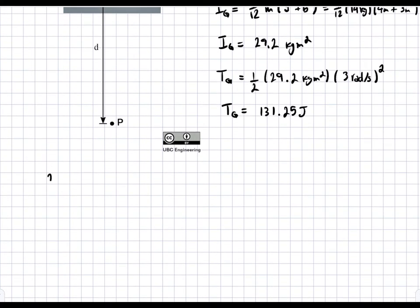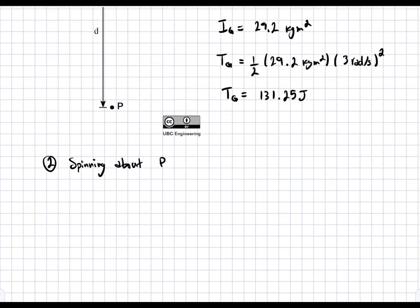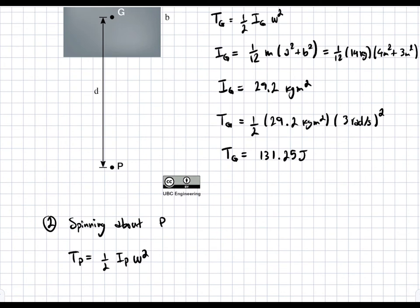Case number two is spinning about P. In this case, we still have the energy. So T_P being equal to one-half I_P omega squared. But I_P is different than I_G. This is I about G. This here is I about this point P. So everything's spinning about this fixed point P.